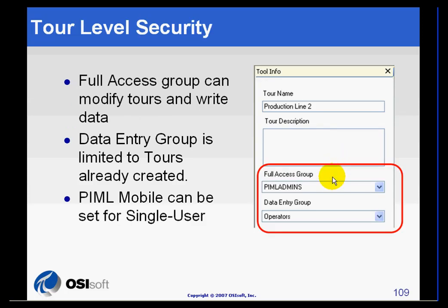Every tool requires at least two groups. The full access group has access to review and send data to the PI Server, and also to create new tools. The data entry group can only work with already existing tools and can collect data and submit that data for approval.